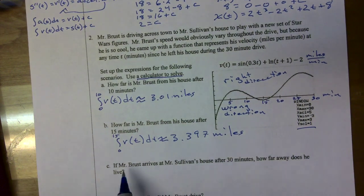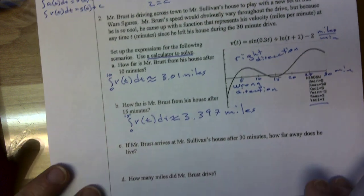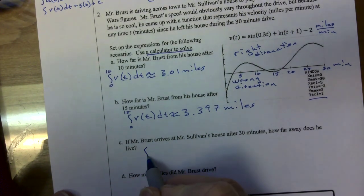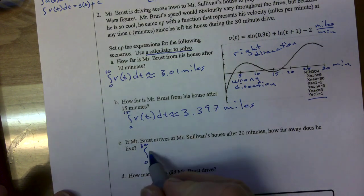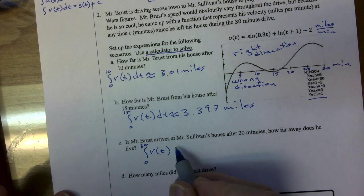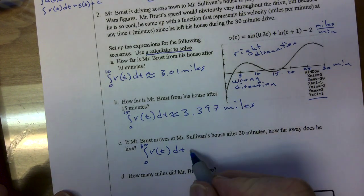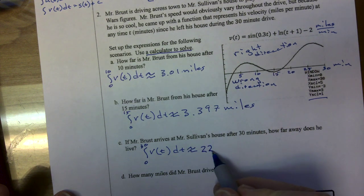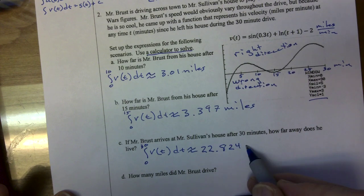If Mr. Bruss arrives at Mrs. Sullivan's home, how far does he live? To get that, I'm going to integrate from 0 to 30 of V of T dt. On my calculator, that gives 22.824 miles.